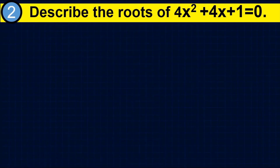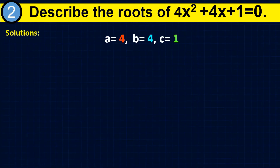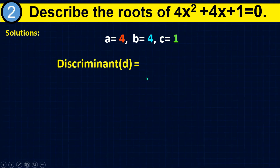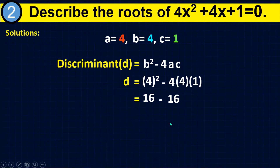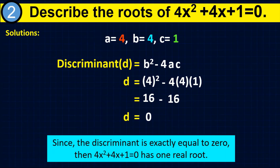Example number 2: describe the roots of 4x squared plus 4x plus 1 equals 0. This equation is already in general form, so a is equal to 4, b is equal to 4, and c equals 1. Substituting to the discriminant: d equals 4 squared minus 4 times 4 times 1. Simplifying: 4 squared equals 16, and 4 times 4 times 1 equals 16, so 16 minus 16 equals 0. Since the discriminant is exactly equal to 0, the equation 4x squared plus 4x plus 1 equals 0 has one real root.